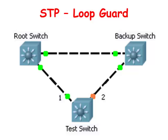These conditions create something known as unidirectional links, meaning that one switch can send and receive BPDUs, but the other switch that it is connected to can only send or only receive BPDUs, but not both.